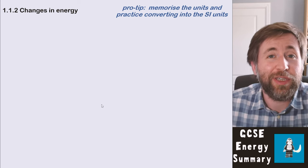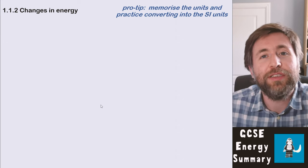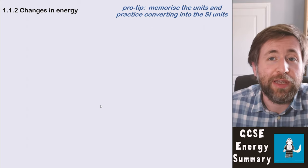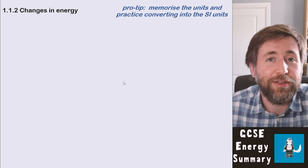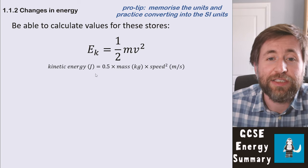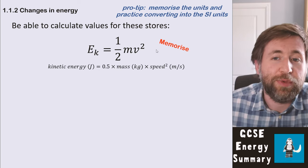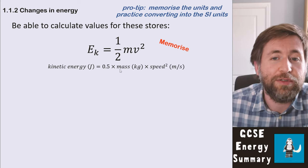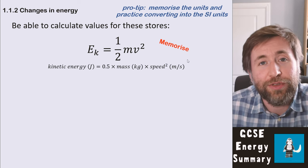The most important thing about energy is that we can calculate it. When talking about changes in energy stores, we need to know the equations to calculate them. A pro tip: memorize the units and practice converting into SI units. The kinetic energy equation is: KE = ½ × mass × speed². Don't be confused by the squared — just type values into your calculator. This is one you need to memorize.